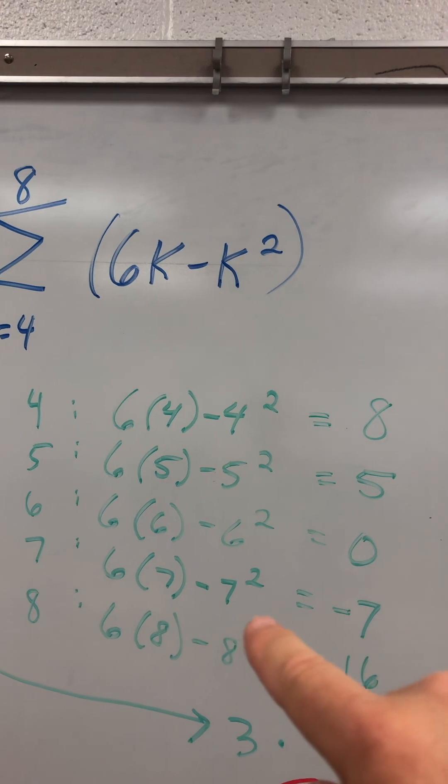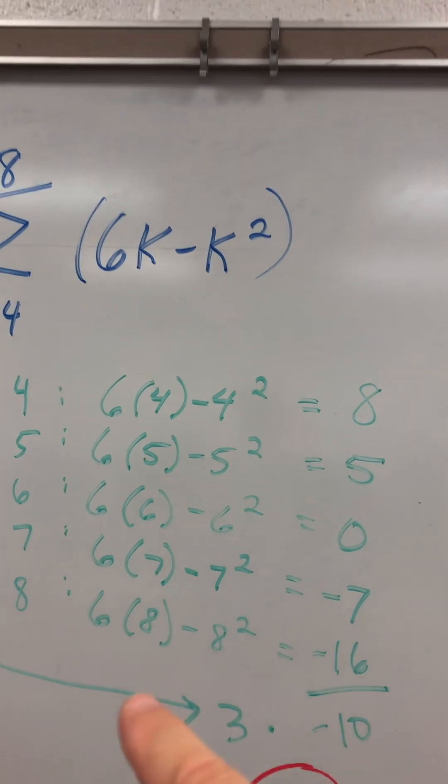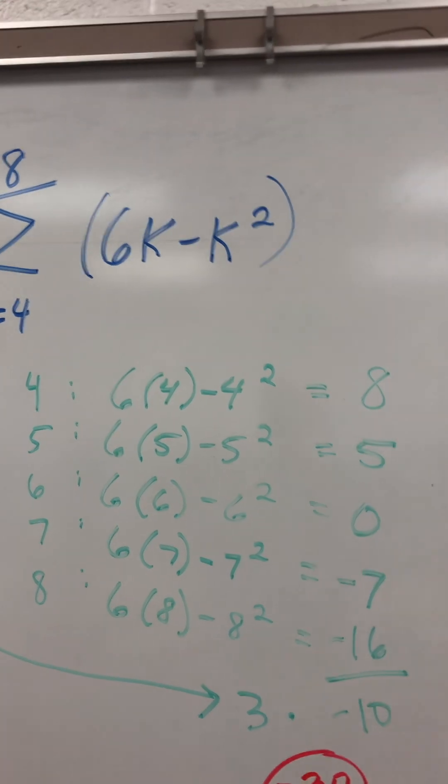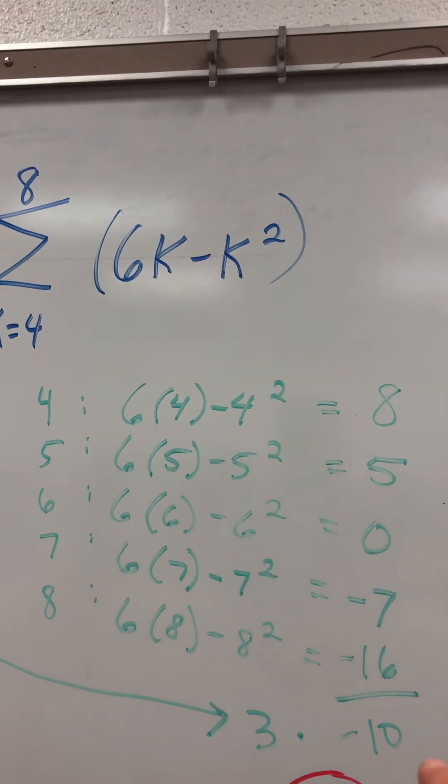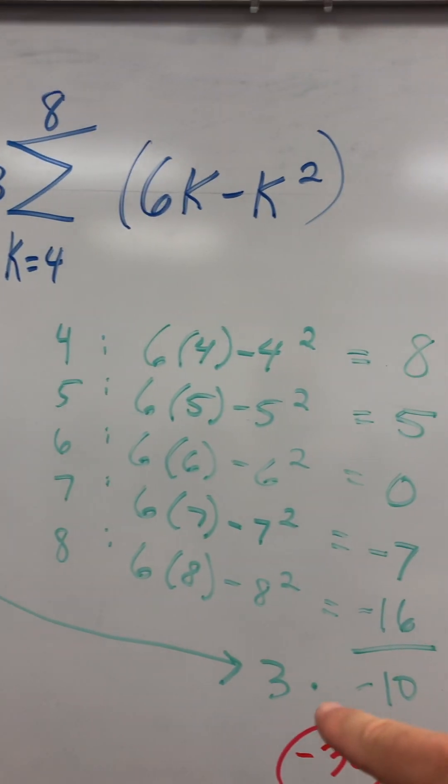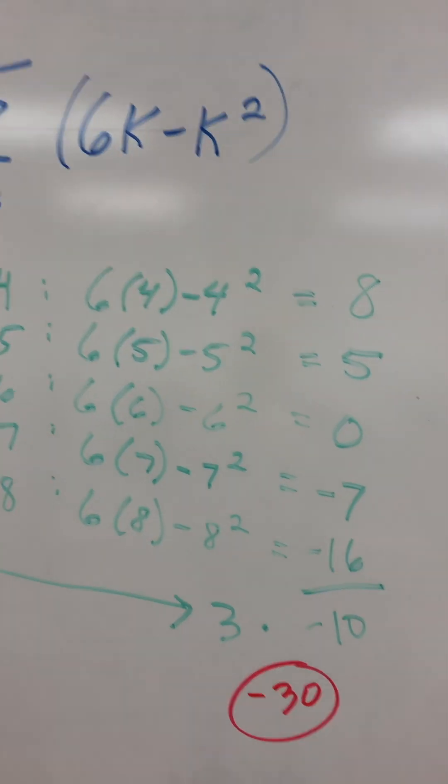6 times 7 minus 7 squared? Negative 7. 6 times 8 minus 8 squared? Negative 16. And I add that together to get negative 10. And I take the 3 and multiply 3 times negative 10 to get negative 30.